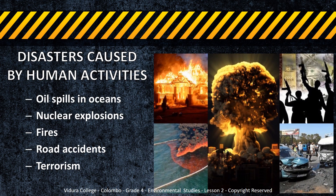Disasters caused by human activities happen due to irrational and irresponsible actions of people. They also cause loss of life or property damage and affect the economy as well. But we can control these disasters by thinking rationally about the consequences.